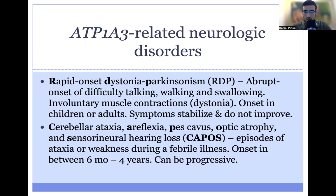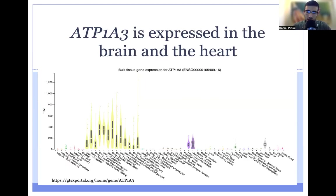CAPOS is the other ATP1A3-related disorder. Its features include cerebellar ataxia, areflexia, pes cavus, optic atrophy, and hearing loss. The distinguishing feature is the presence of ataxia or weakness following a fever, typically presenting in a child between six months and four years of age. CAPOS can be progressive as well. The takeaway is that these disorders exist on a spectrum. A gene expression figure from GTEx shows that ATP1A3 is expressed in the brain and in the heart, but not in other tissues.